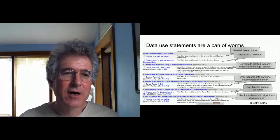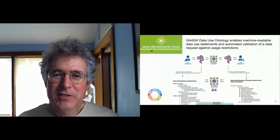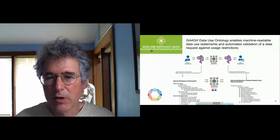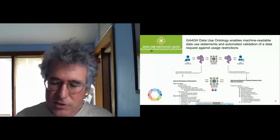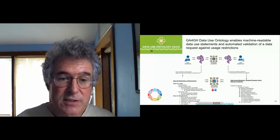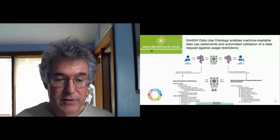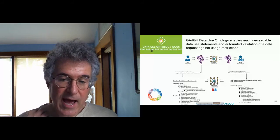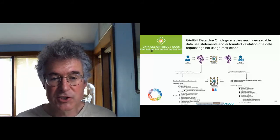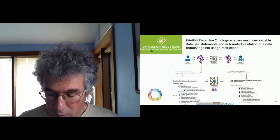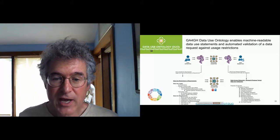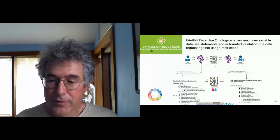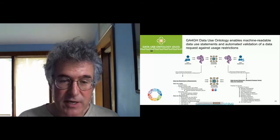To disentangle this, the Global Alliance's ethics and governance working group has developed something called the Data Use Ontology, or DUO, which can be applied both to patient consents and to data usage agreements and access requests. They do this by creating a very detailed ontology of what the data is to be used for, who can use it, and how it can be used — one ontology for data accessibility, another for data requests. A matching algorithm can then indicate whether the machine-readable proposal for data use matches the machine-readable data use restrictions.